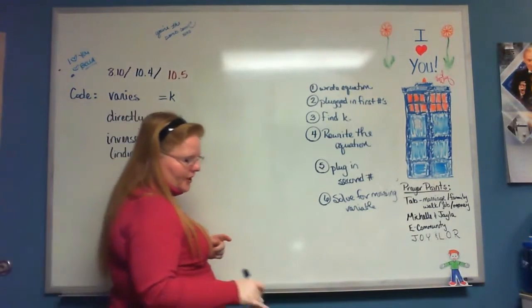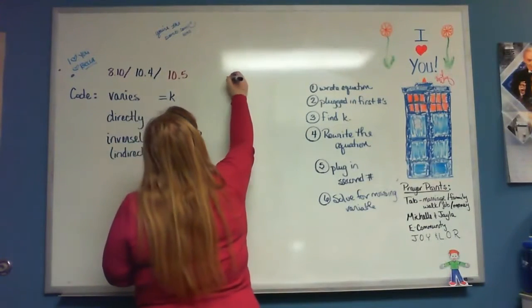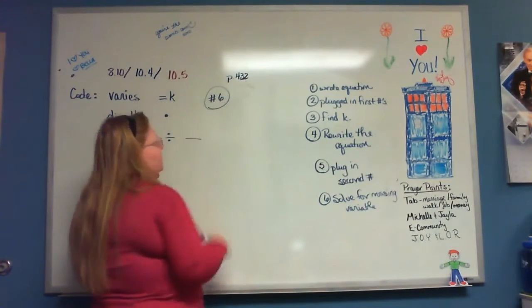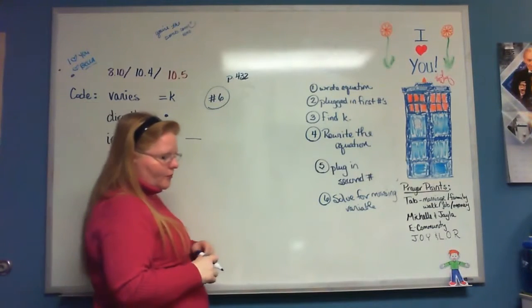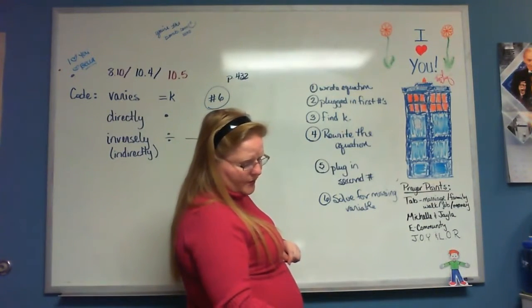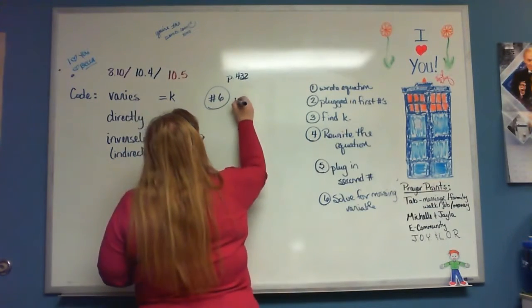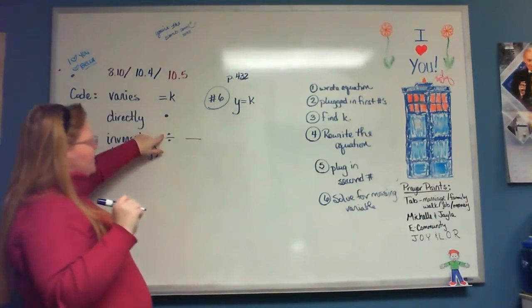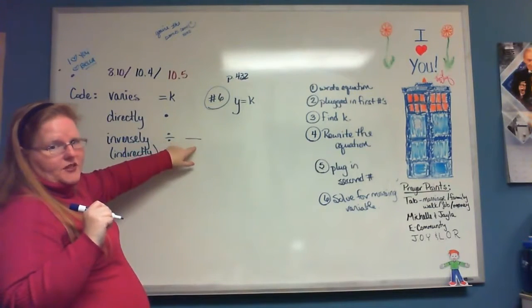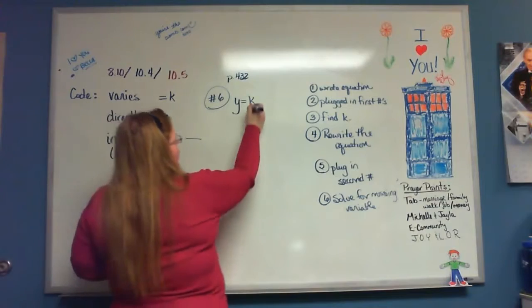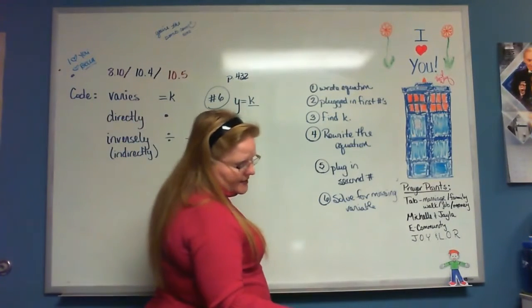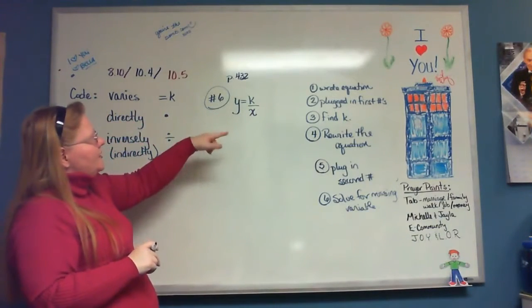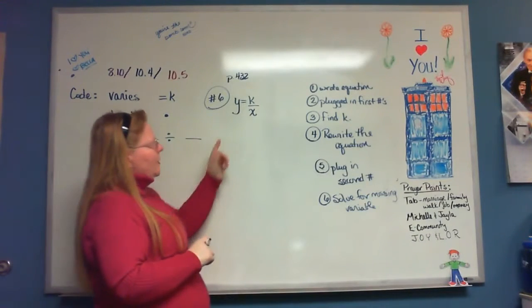Looking on page 432 at number 6. It says Y varies indirectly as X. I write Y, 'varies' is still equals K, and 'indirectly' this time is a division sign — always write it as a fraction. 'Varies indirectly as X' means X goes on the bottom. So Y equals K divided by X. That's my equation.